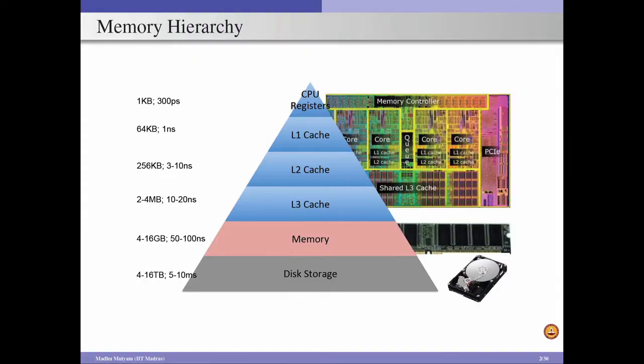The memory hierarchy consists of multiple levels, and this example is typically used for server type systems. At the top of the pyramid we have the processor registers or CPU registers, which typically take less than 1 KB of space, but the access time is very fast — typically in the order of picoseconds. The next level is the Level 1 cache memory, which has a size typically around 32 KB to 64 KB and an access time of about 1 nanosecond. As we move further down the pyramid the size of the memory increases and the access times also increase, but the cost per bit reduces significantly.